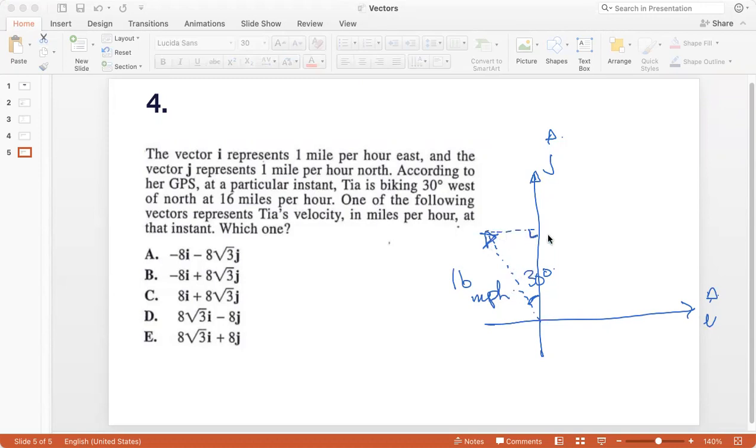So if I drop a perpendicular like this, right? Then this is a right triangle and I can use trigonometric ratios to find the values of this and this, right? So let's say this is a b and c. So a b over 16 will be sine 30, right? Because sine is opposite over hypotenuse and sine 30 is 1 by 2.